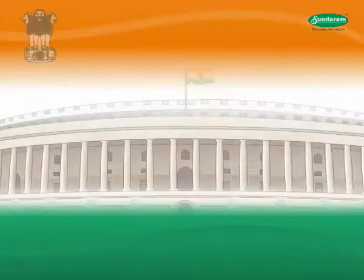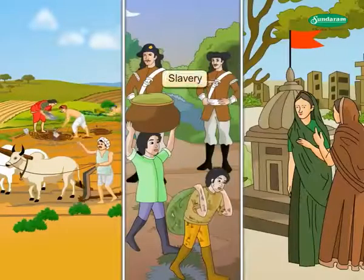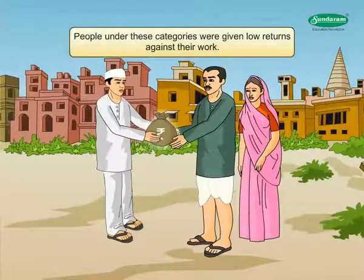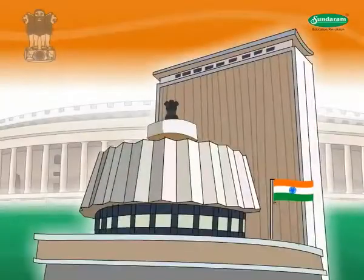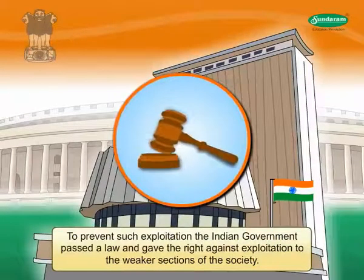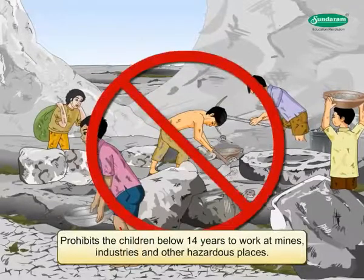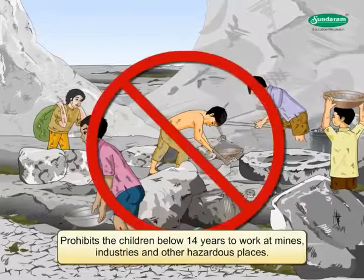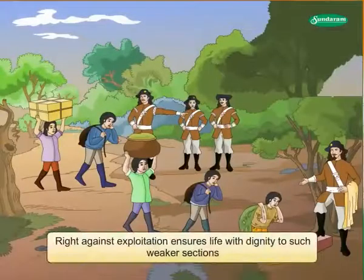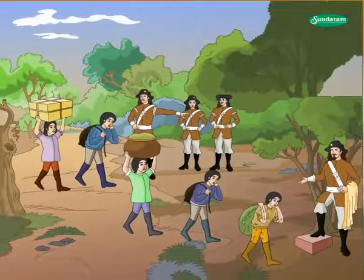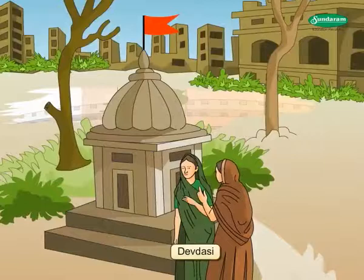Right against Exploitation. Since ancient times in India, there was prevalence of slavery, manual labor, devadasi custom, as well as exploitation of weaker sections. People under these categories were given low returns against their work. To prevent such exploitation, the Indian government passed a law and gave the right against exploitation to the weaker sections of society. There is also a provision that prohibits children below 14 years from working at mines, industries, and other hazardous places. Right against exploitation ensures life with dignity to such weaker sections and helps to abolish the tradition of slavery, devadasi, and exploitation.